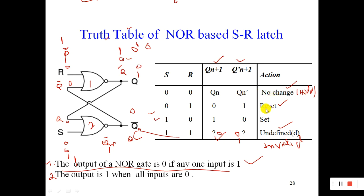In these conditions we have the Hold condition, the Reset value, and for S=1 we have the Set value where Q will be 1. When we have S=1 and R=1, the condition becomes Invalid — the circuit becomes confused in terms of output.